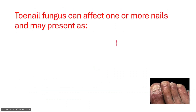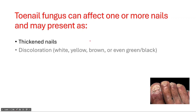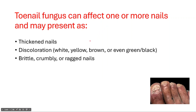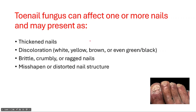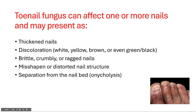The infection can affect one or more nails and may present as thickened nails, discoloration, brittle or crumbly or ragged nails, misshapen or distorted nail structure, and separation from the nail bed — which is known as onycholysis.